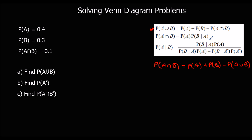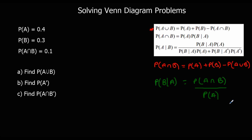The conditional probability formula — P(B|A) means the probability of B given A. For a given-that question, it's the probability of A∩B divided by whatever is given. So if A is given, divide by P(A). If it's P(A|B), then B is given, so divide by P(B).